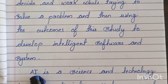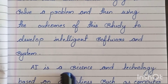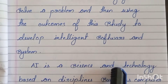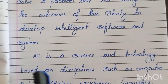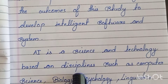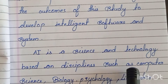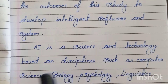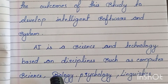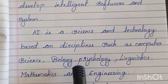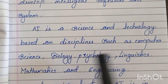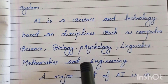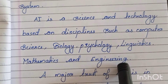Artificial intelligence is a science and technology based on disciplines such as computer science, biology, psychology, linguistics, mathematics and engineering.